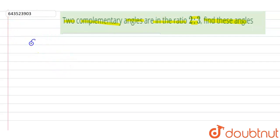Before going for solution, first we will understand what are complementary angles. Complementary angles are those pair of two angles whose sum is 90 degrees. If the sum of two angles is equal to 90 degrees...